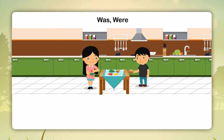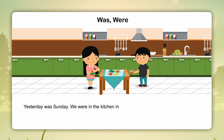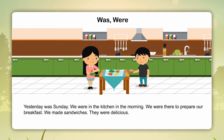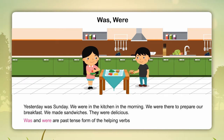Look at the pictures. Yesterday was Sunday. We were in the kitchen in the morning. We were there to prepare our breakfast. We made sandwiches. They were delicious. Was and were are the past tense forms of the helping verbs is, am and are.